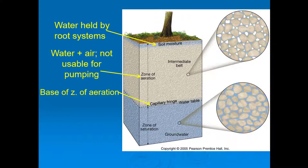The lower limit of the zone of aeration is called the capillary fringe, which marks the bottom of the zone of aeration. The capillary fringe sucks up a little bit of water from the zone of saturation through capillary action — like placing a dry sponge on top of water in a bucket, where some water is sucked up into the sponge above it.